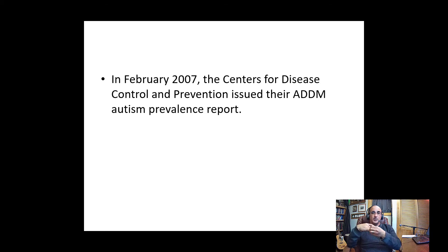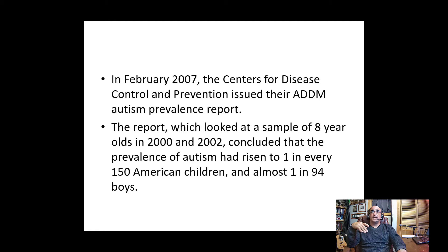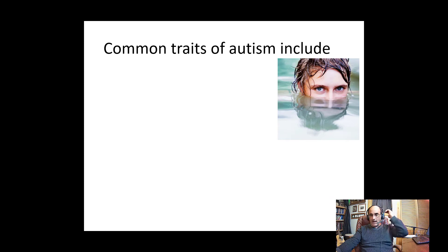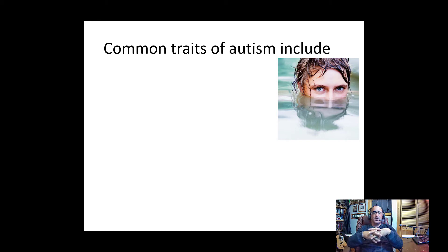In 2007, the Centers for Disease Control and Prevention provided data on autism prevalence. Looking at a sample of 8-year-olds, they concluded that prevalence had risen to 1 in every 150 American children, or almost 1 in 94 boys. It's important to recognize that this covers a wide spectrum — from high-functioning autism and Asperger's to people with social and communication deficits, right across to those with complex and profound autism.